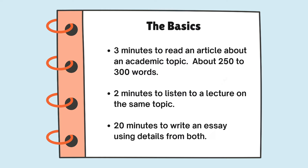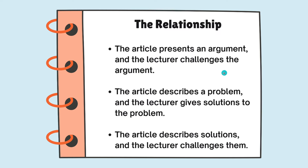How is this question designed? Here's how it works. First, you'll have three minutes to read an article about an academic topic — about 250 or 300 words. After that, the article will disappear and you'll have two minutes to listen to a lecture on the same topic. Then you'll have 20 minutes to write an essay using details from both sources. Keep in mind that you can only hear the lecture one time, but the reading will be visible as you write your essay. You can always see the reading — that's pretty cool.